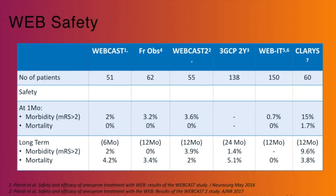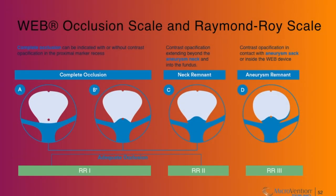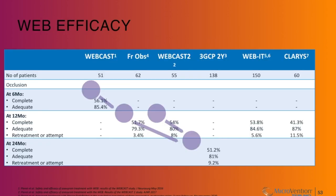Looking at all published data: mortality and morbidity with WEB is very low — WEB is safe, no question. It is reasonably easy to use now compared to when we started in 2012. WEB introduced a new occlusion scale where adequate occlusion includes complete occlusion plus neck remnant. There is debate about this, but adequate occlusion rates are around 80 percent — not 100 percent. The retreatment rate is around 9 percent, around 10 percent in my own center.